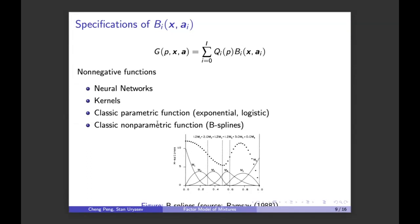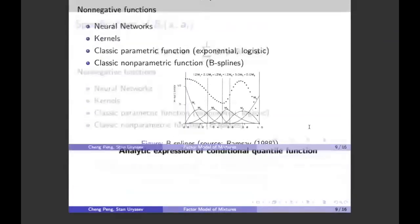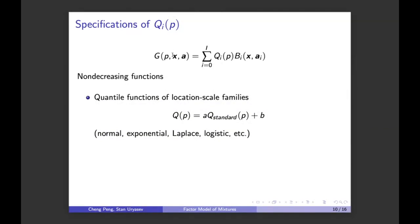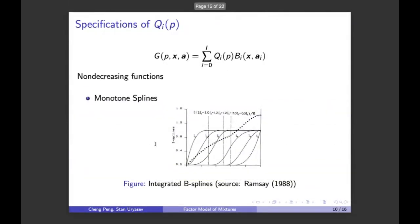With non-negative p sub i and non-decreasing Q sub i, if all Q sub i have an analytic expression, this gives an analytic expression for the conditional quantile function — a weighted sum of basis quantile functions. For Q sub i, one possible choice is the quantile functions of common distributions like normal, exponential, etc. Another choice is the monotone spline, which is the integrated B-spline.